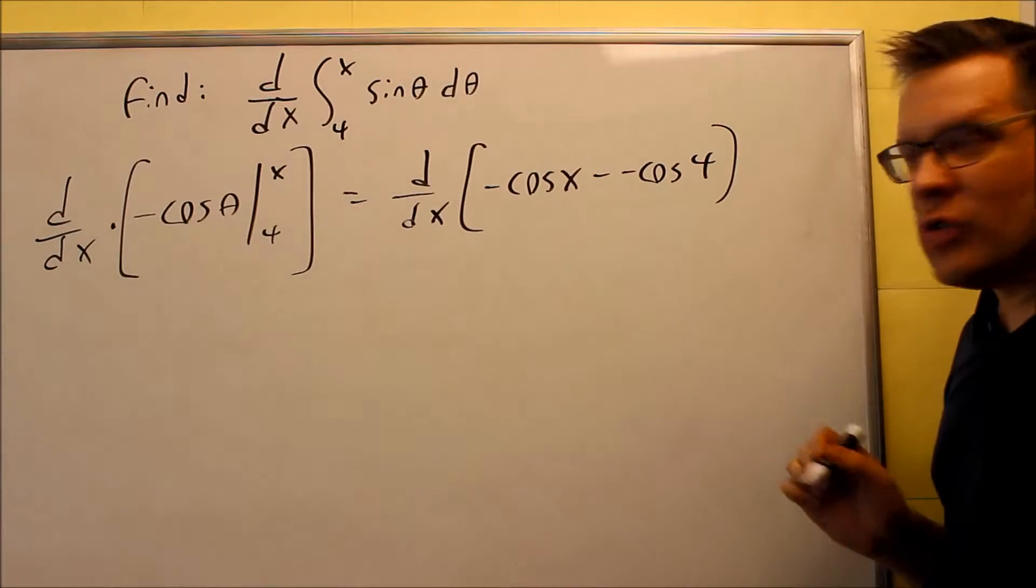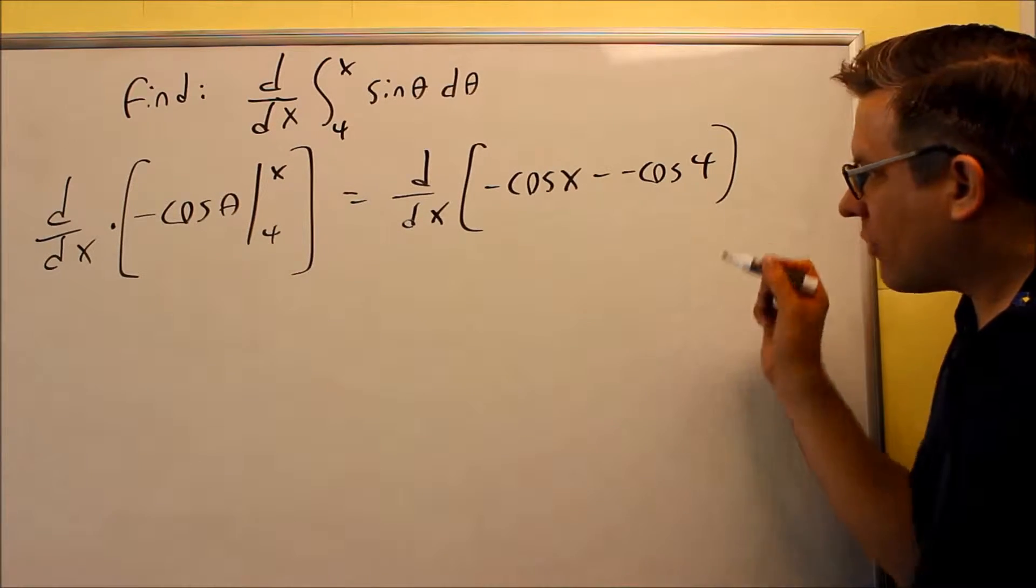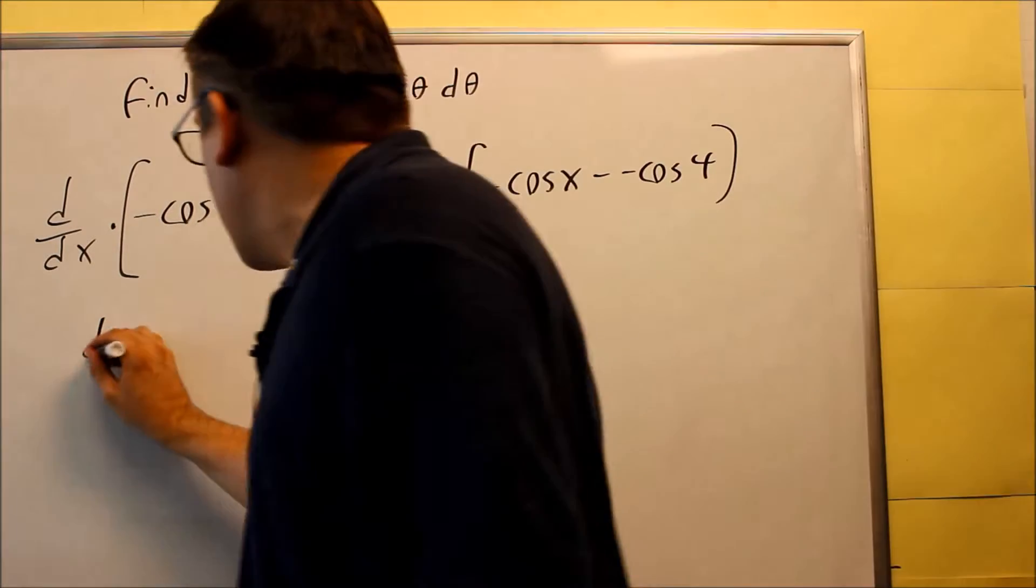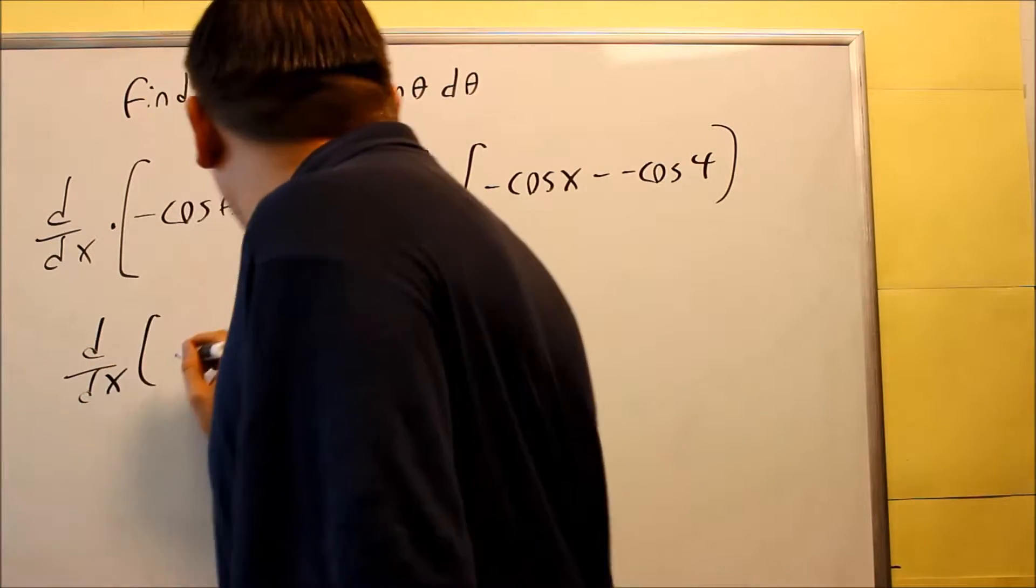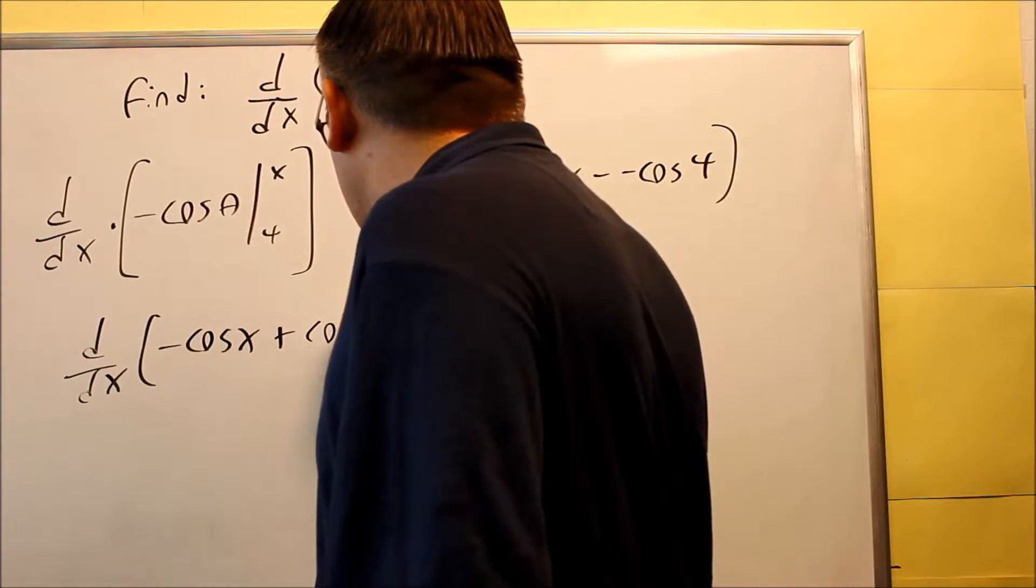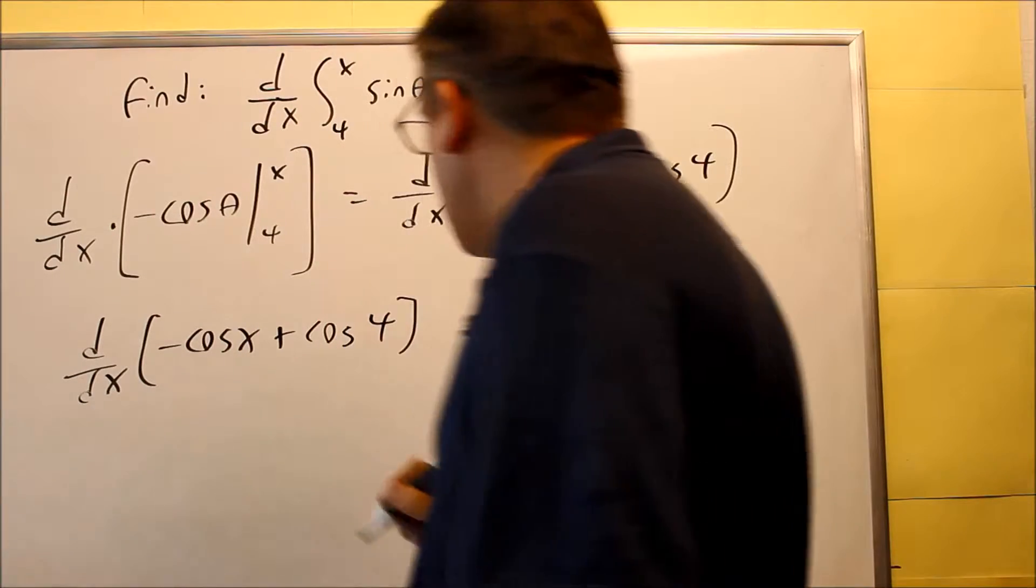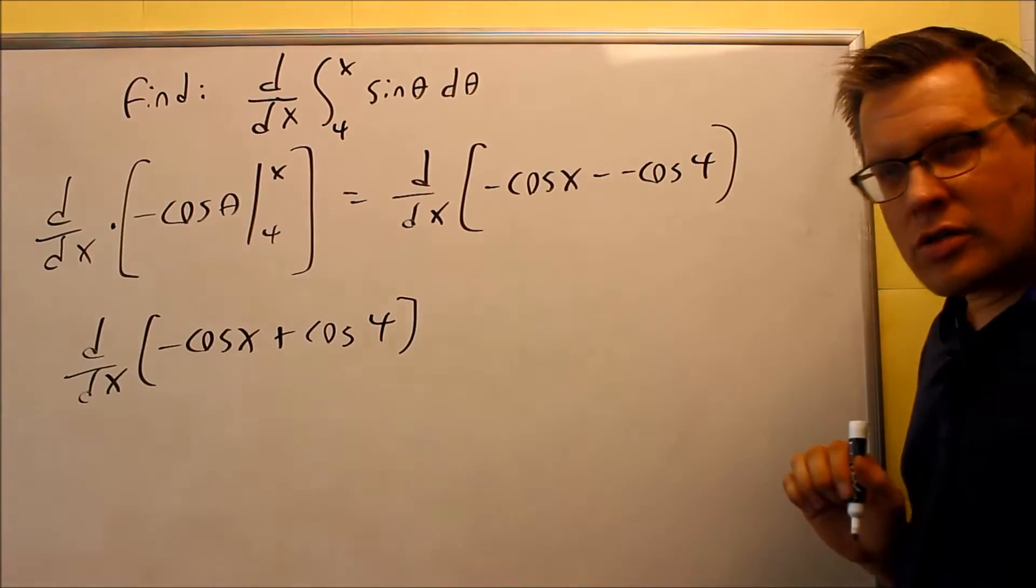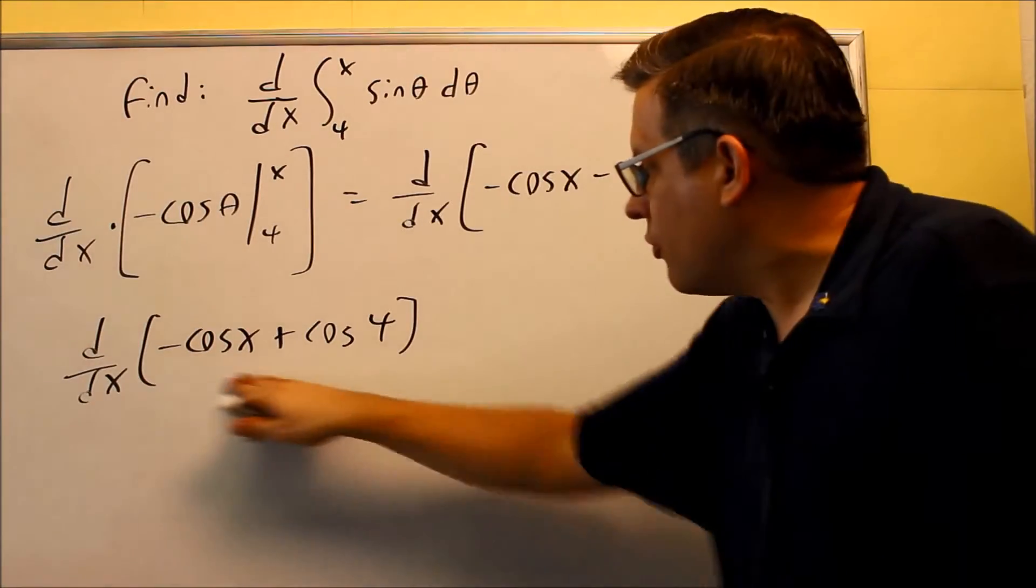and 4 is not a value we can get under unit circle so we'll have to leave it as that. So we're going to get the derivative of negative cosine x plus cosine of 4. So now that we've gone through all this, now we're basically going to take the derivative of all this,